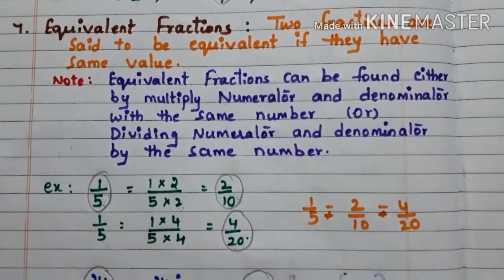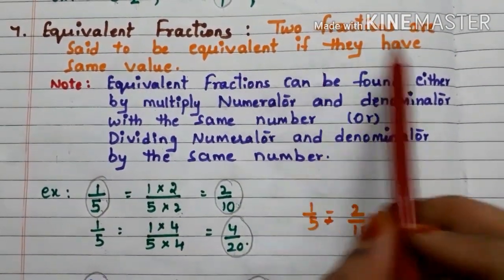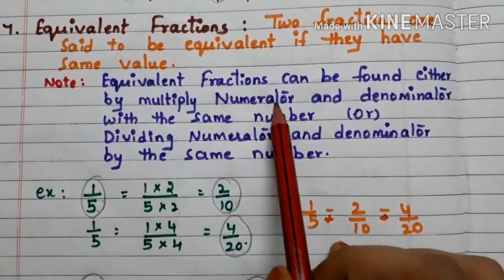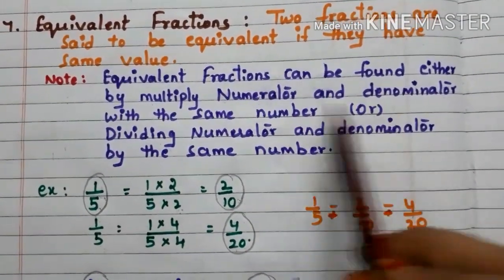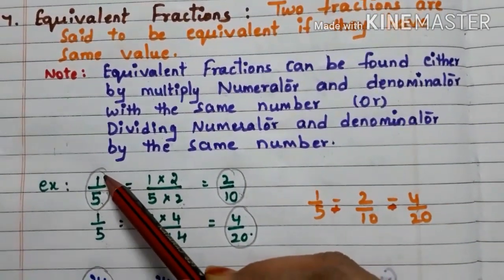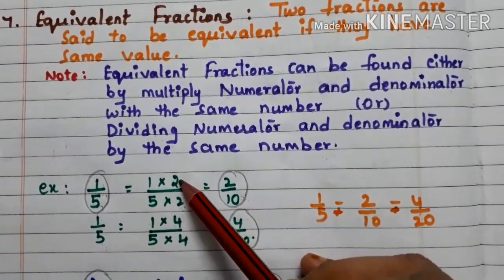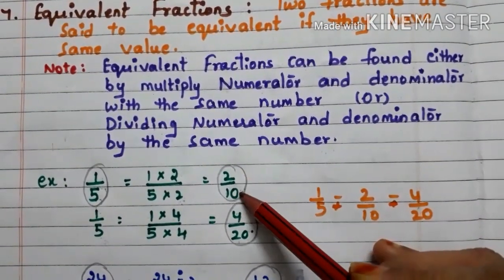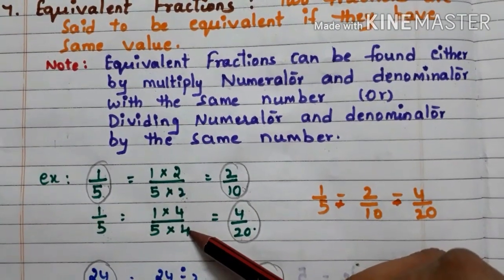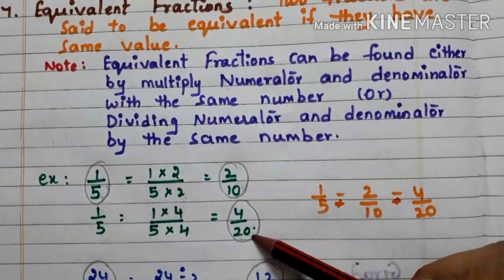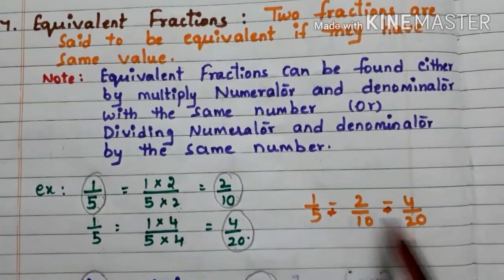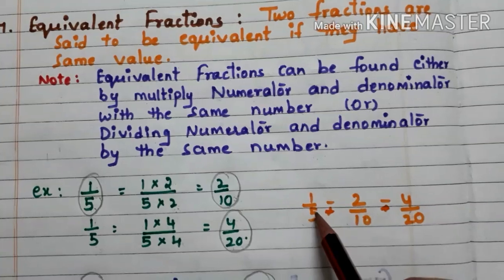Now, equivalent fractions. Two fractions are said to be equivalent if they have the same value. Equivalent fractions can be found either by multiplying the numerator and denominator with the same number or dividing the numerator and denominator by the same number. Here we have the fraction 1 by 5. Multiplying numerator and denominator by 2 gives 2 by 10. Multiplying by 4 gives 4 by 20. So 1 by 5, 2 by 10, and 4 by 20 are equivalent fractions because they have the same value.